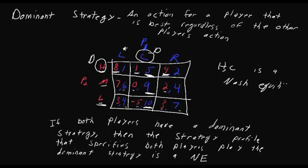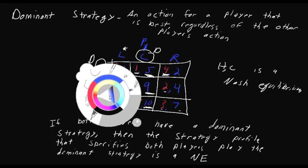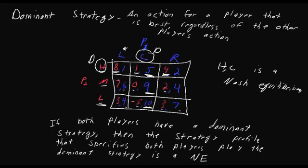Players don't always have a dominant strategy. For example, if I made a quick change to this payoff matrix here and we turn this seven into a nine. Okay, bear with me for a second here. We see now that when player one plays L, player two would actually prefer to play M.